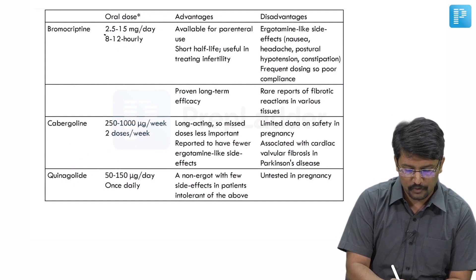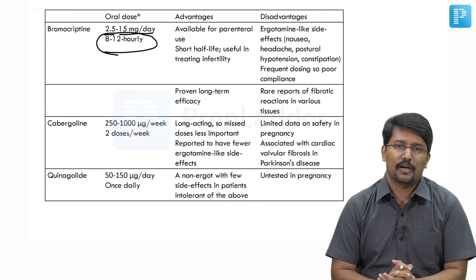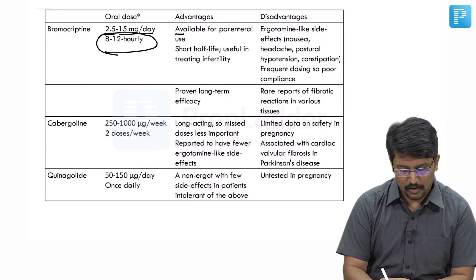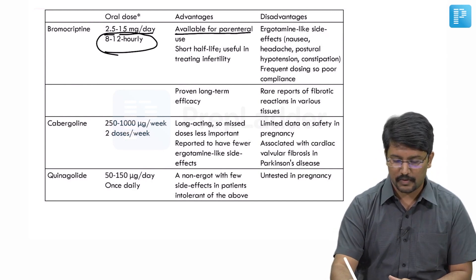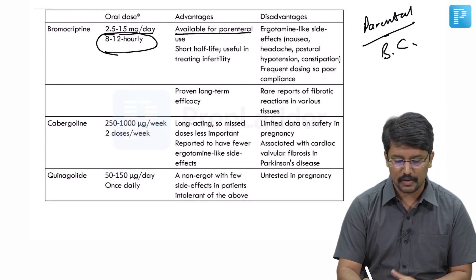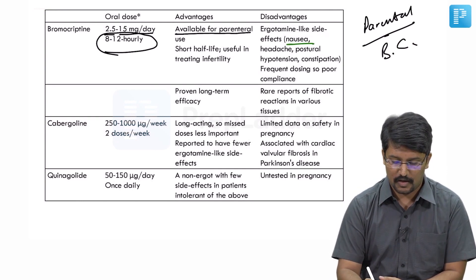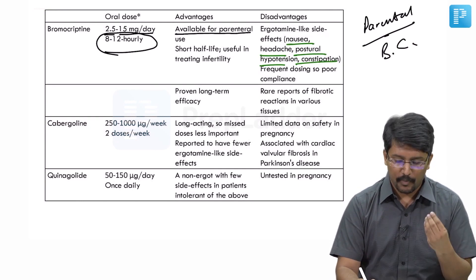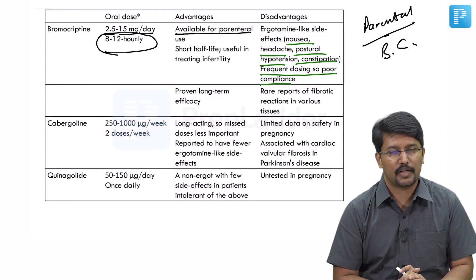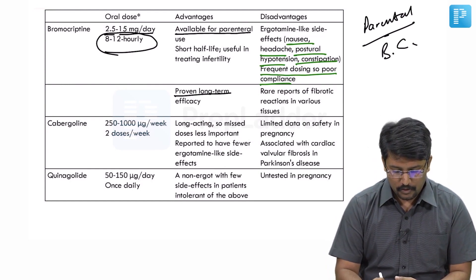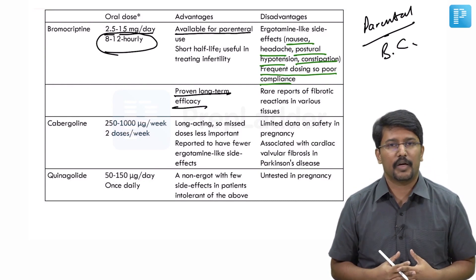Bromocriptine is used at a dose of 2.5 to 15 milligrams per day and needs BD or TID administration, at intervals of 8 to 12 hours. It is available for parenteral use — so if a question asks which dopamine agonist is available for parenteral use, the answer is bromocriptine. Its main disadvantage is ergot-like side effects including nausea, headache, postural hypotension, and constipation. Frequent dosing leads to poor compliance, though it has proven long-term efficacy as the first drug in practice.